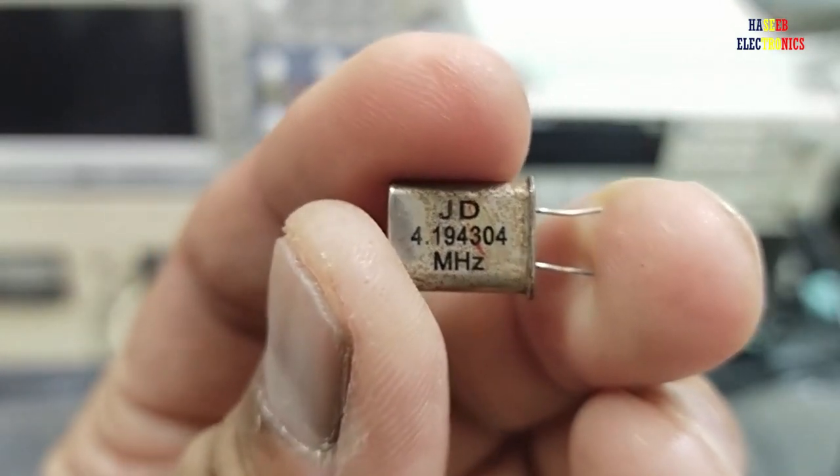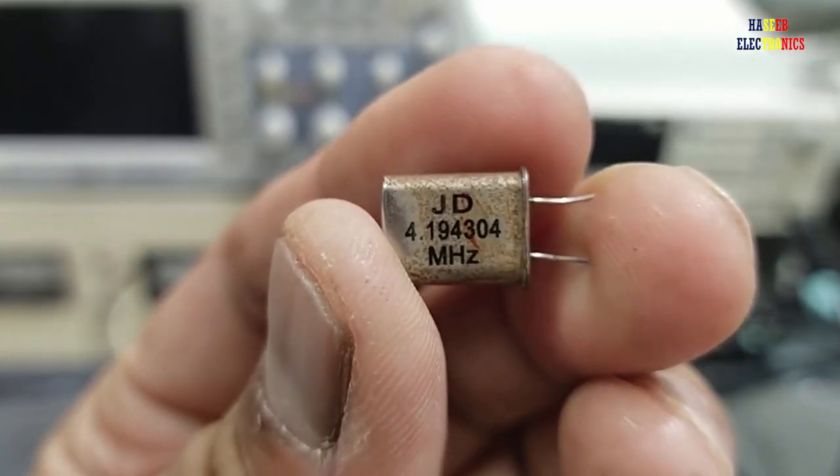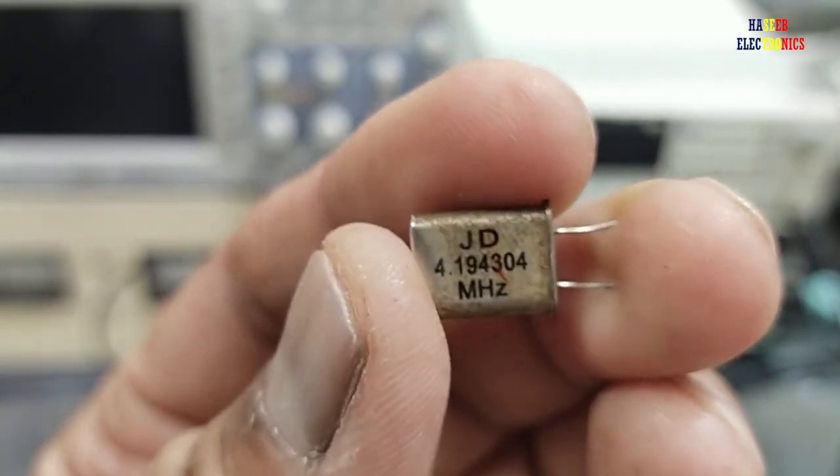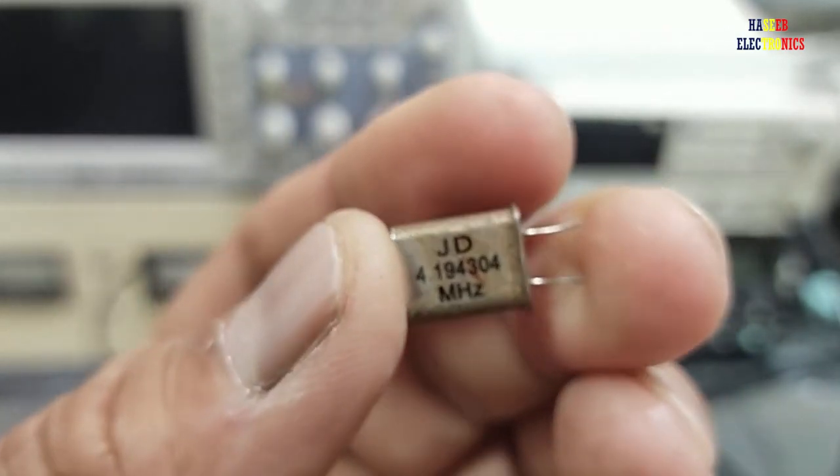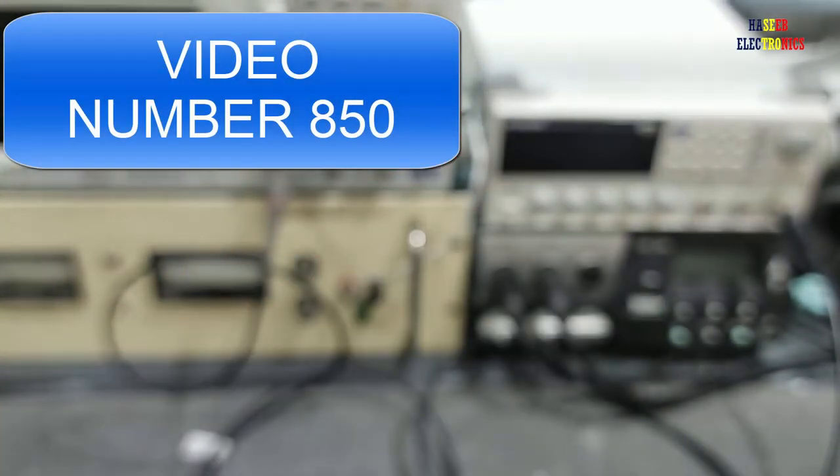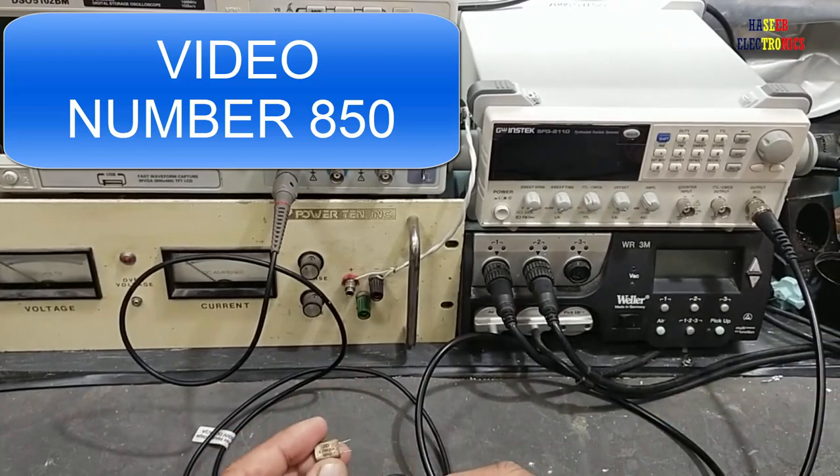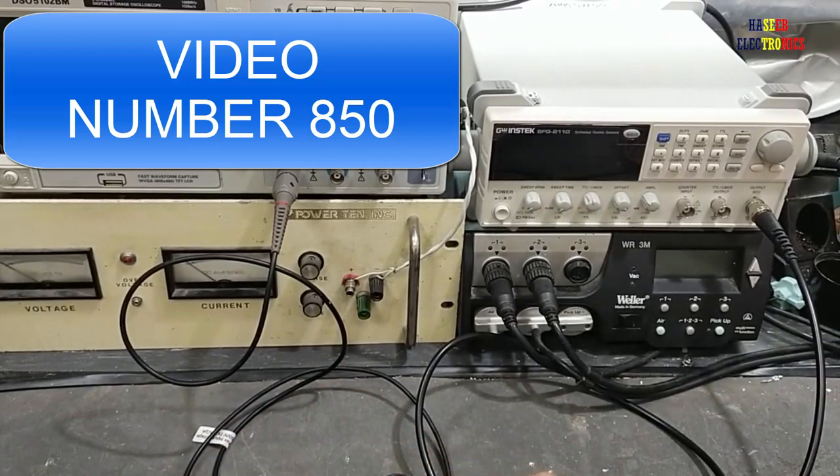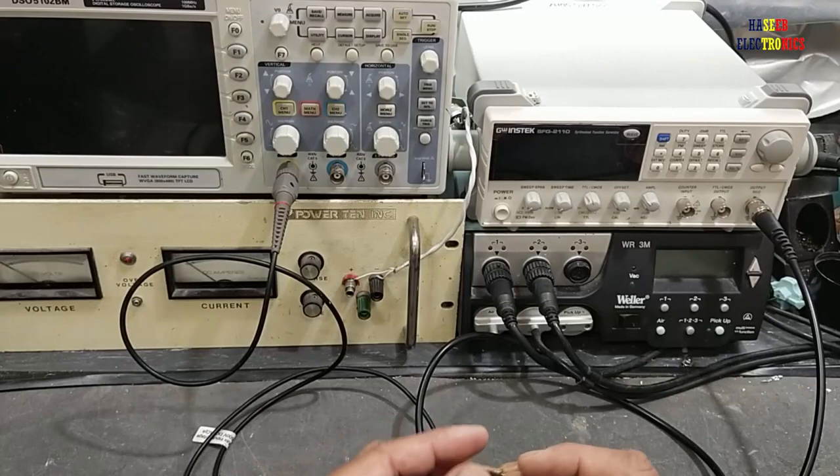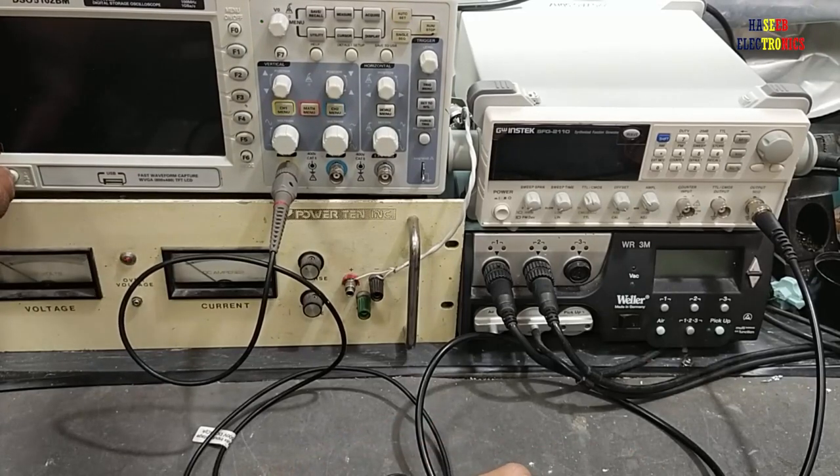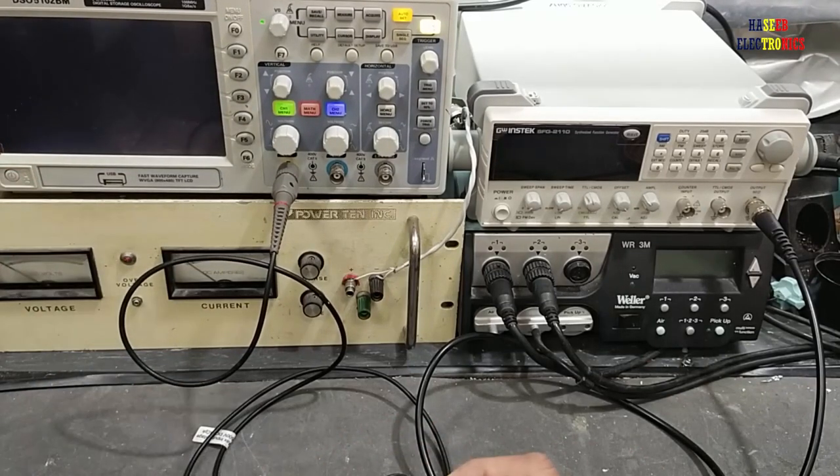Welcome back to my channel. Today I'll show how we can test a crystal oscillator and determine its resonant frequency. In my last video, I explained the simplest method using a 7404 IC. In this video, I will use an oscilloscope and function generator.